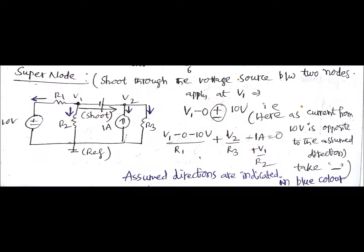The first current will be V1 minus 0, that is ground, minus 10 volts. Why it is 10 volts and why it is minus 10, why not plus 10? Because it is opposing the node voltage V1. How you are saying that it is opposing? Because here the current from 10 volts is opposite to the assumed direction. What is the assumed direction? Assumed direction is from V1 to ground.